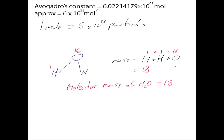But what does that mean practically? If we measure water in a measuring cylinder or on a weighing scale, how do we know how many molecules we have? This is where Avogadro's number and the mole come in. The value 18 is the mass of one particle — we need to know the mass of particles in everyday quantities.